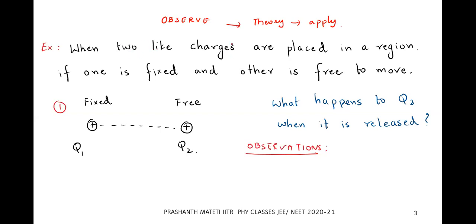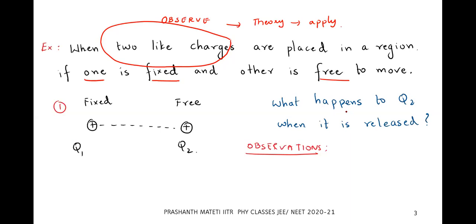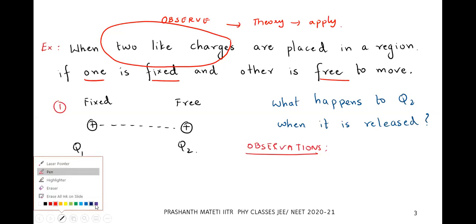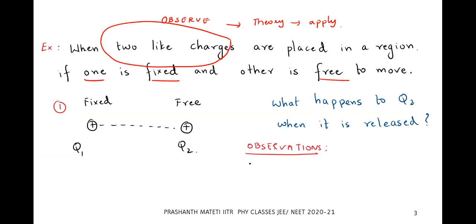In this first example, take two like charges placed in a region. Let q1 be fixed and q2 be free. Now think: when you hold q2 initially and then release it, since it is free to move, what is going to happen? These two charges are going to repel each other.